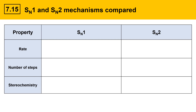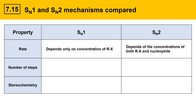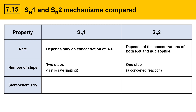First we'll look at the rate. For the SN1 mechanism, the rate depends only on the concentration of the alkyl halide, RX. For the SN2 reaction, the rate depends on both the concentrations of the alkyl halide, RX, and the nucleophile. For number of steps, the SN1 mechanism is two steps, and the first step is rate limiting. For the SN2 mechanism, it's one step, and that's called a concerted reaction.